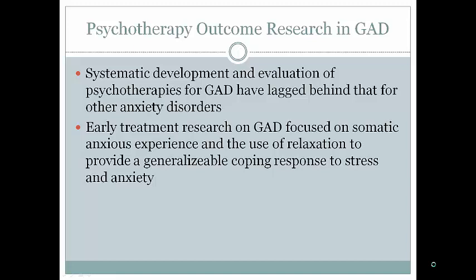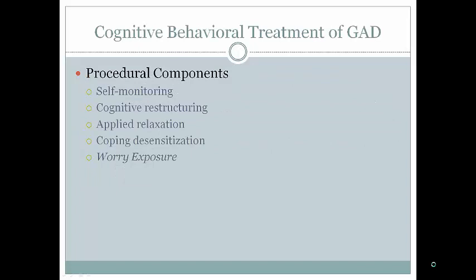Current GAD treatments still involve relaxation. In CBT for GAD, you do self-monitoring to notice situations causing stress and anxiety, how often they occur, and associated thoughts. You then do cognitive restructuring, applied relaxation, coping and desensitization, and worry exposure — actually having the patient expose themselves to the worry situation.